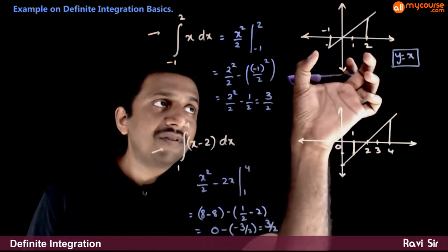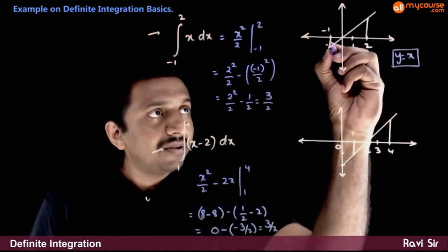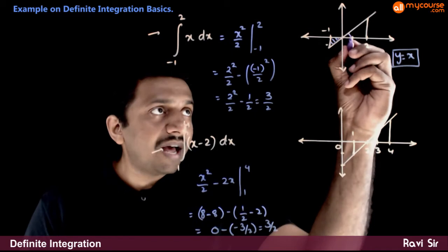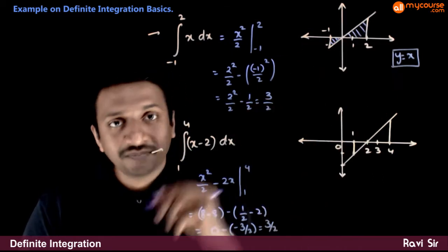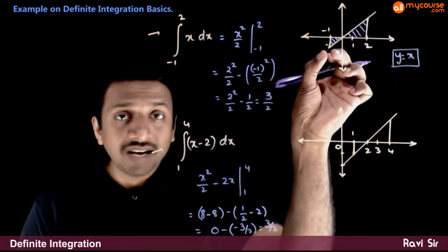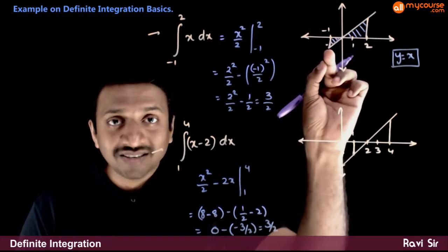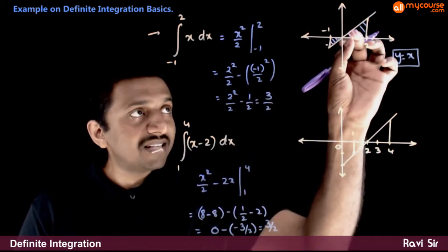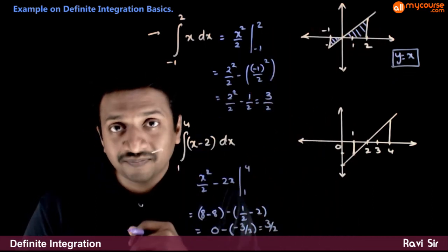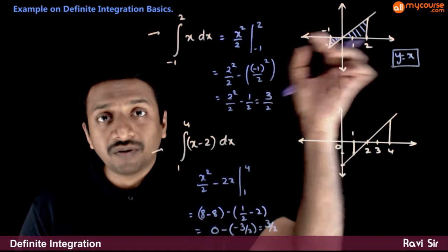If you want to integrate from minus 1 to 2, you have a triangular area below the x-axis and a triangular area above it. The triangle area below the x-axis needs to be considered as a negative area, and the area above the x-axis needs to be considered as a positive area. Let us find the algebraic sum of these two areas.